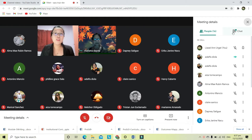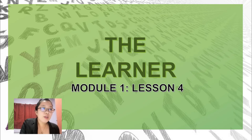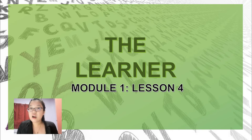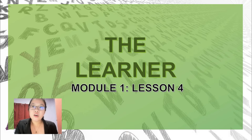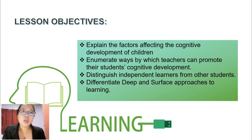For today, class, we're going to discuss all about the learner as the first element of teaching and learning. This is the last lesson in our first module. The objectives of this lesson are: explain the factors affecting the cognitive development of children, enumerate ways by which teachers can promote their students' cognitive development.